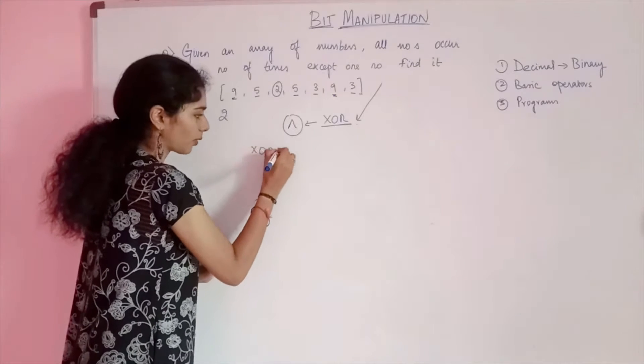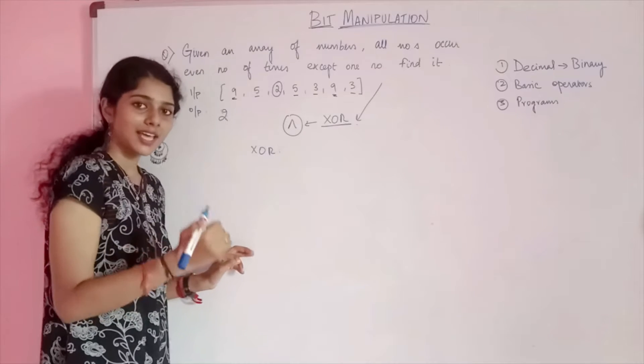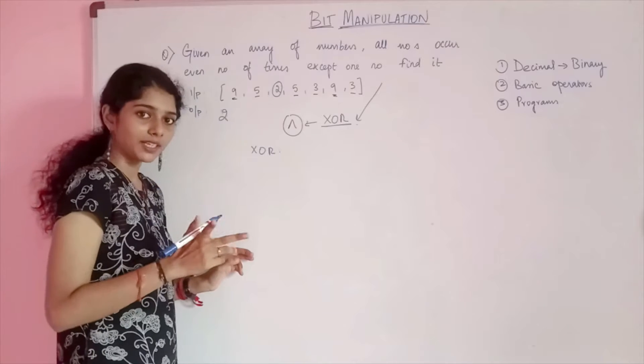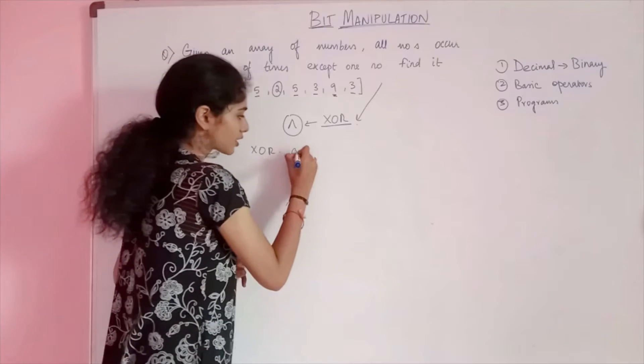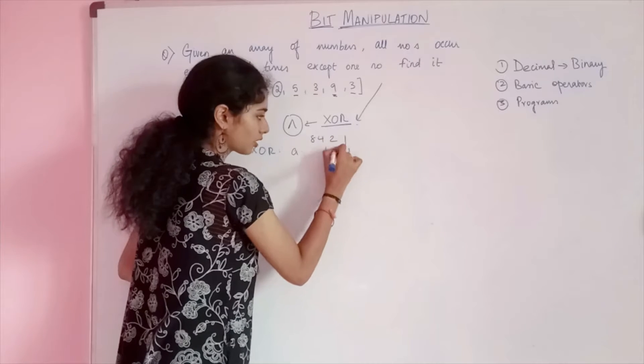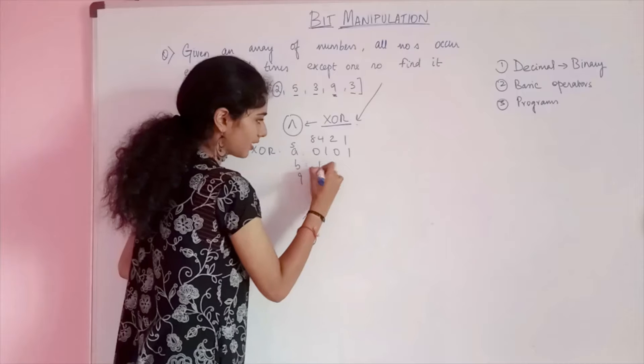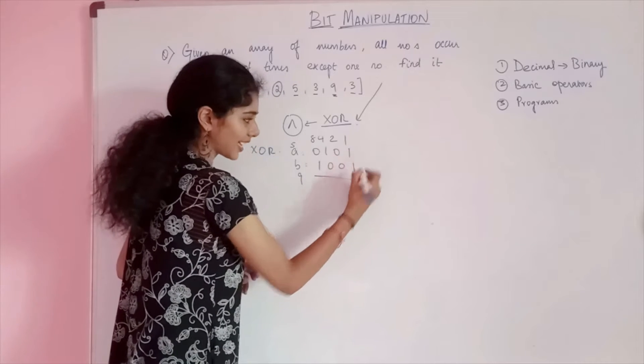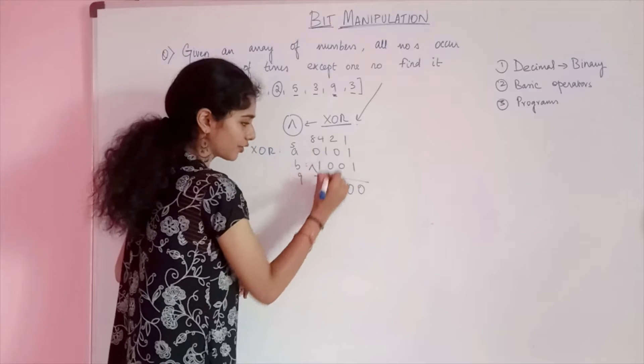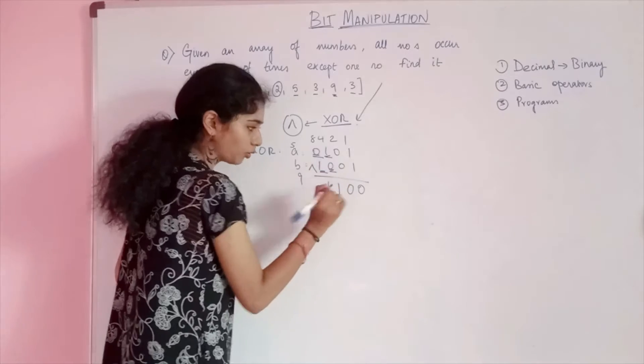What was XOR all about? XOR was that if you have the same bits, the output is going to be 0. If you have different bits, the output is going to be 1. So if A is 5 and B was 9, if it was same, the output will be 0. If it was different bits, the output is 1.